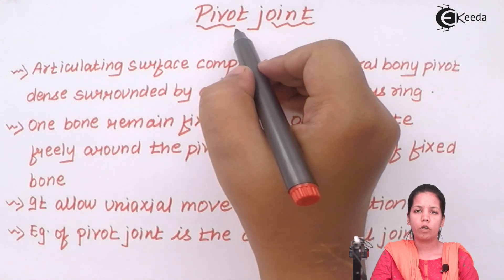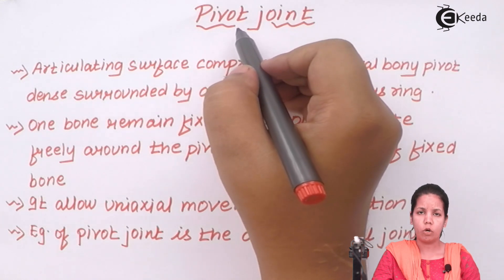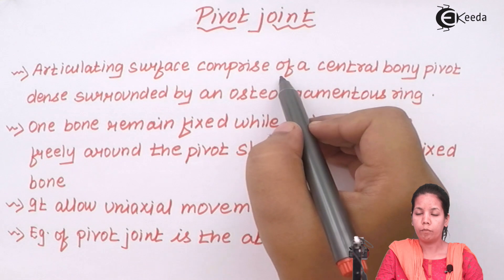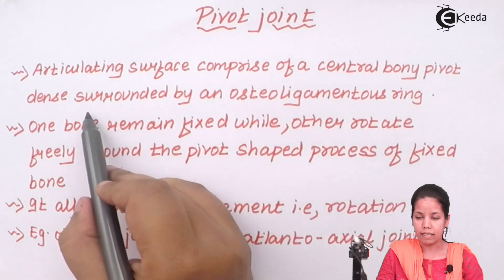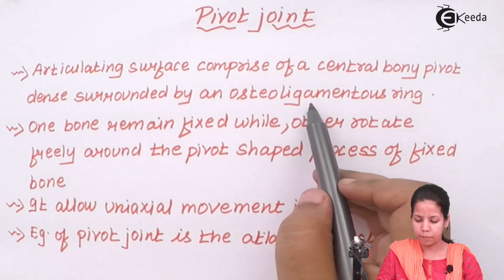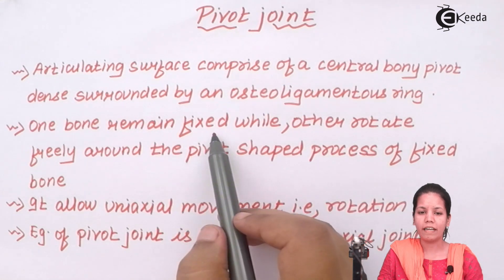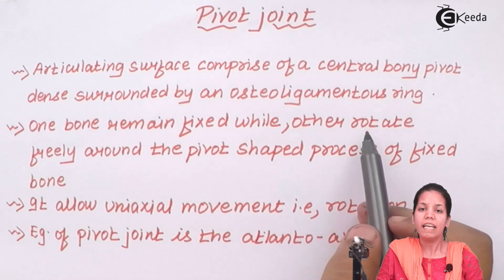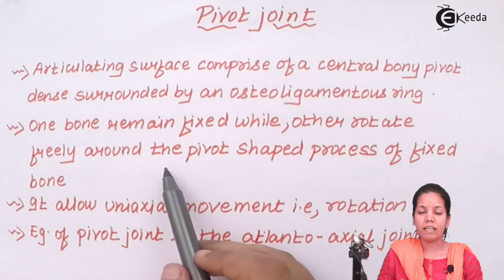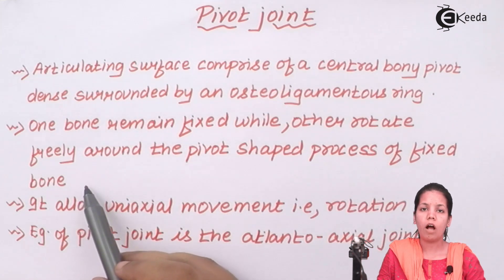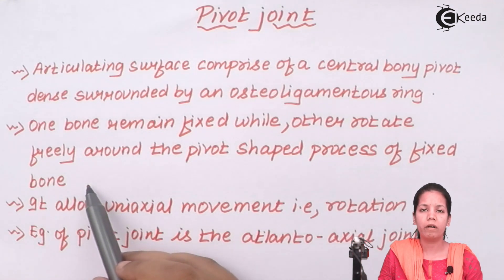Pivot joint is a kind of synovial joint, along with hinge joint and ball and socket joint. In pivot joint, the articulating surface of a bone — the central bony pivot — is always surrounded by osteoligamentous rings, meaning there is a bone attachment along with a continuous ligamentous ring. One bone is always fixed at its place while the other part of the bone rotates freely. This movement is always around the pivot-shaped process that is attached to the fixed bone.